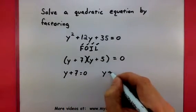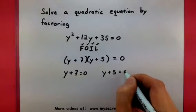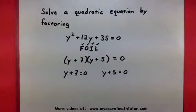So, this really simplifies the problem because now instead of worrying about exponents or anything like that, they're gone. All we have is this equation, y plus 7 equals 0, and this one over here, y plus 5 equals 0. So, now let's go ahead and solve each of these separately.